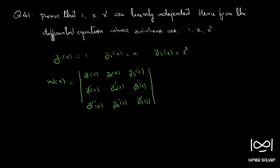The Wronskian is defined as this determinant, and if the Wronskian is not equal to 0 in the given interval for all x, then y1, y2, and y3 are linearly independent. Here the matrix becomes: first row 1, x, x²; second row 0, 1, 2x; third row 0, 0, 2.